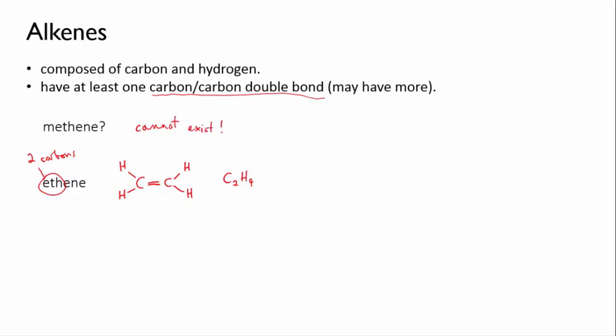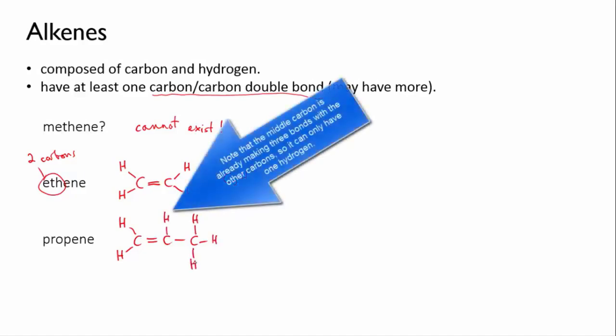The next one in the series after ethene is propene with three carbons. So we draw them out, and we join the first two by a double bond and the next by a single. Remember, we said that we were going to focus on alkenes with just one double bond here. And then we fill in the remaining bonds with hydrogens. That gives us C3H6.